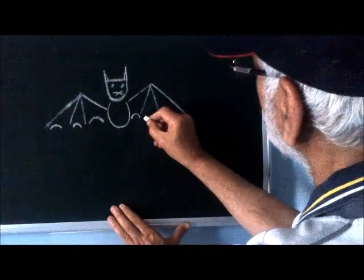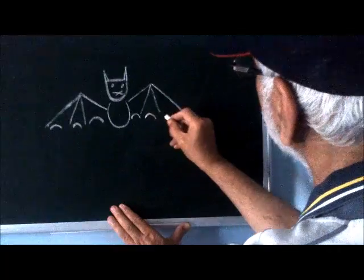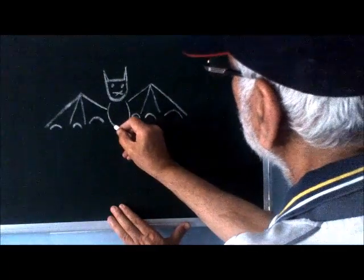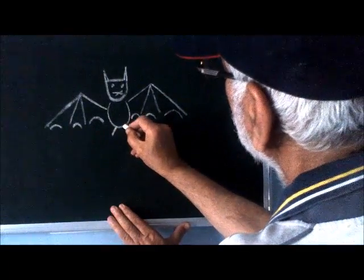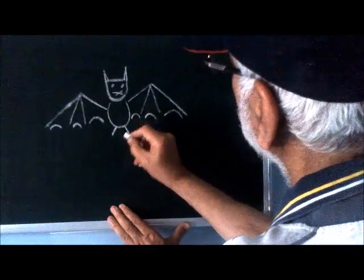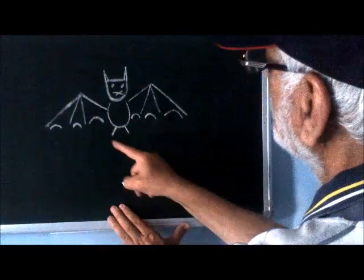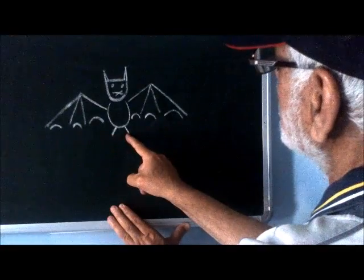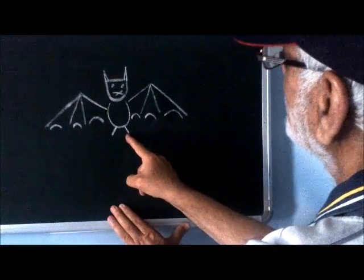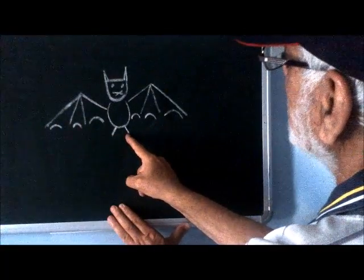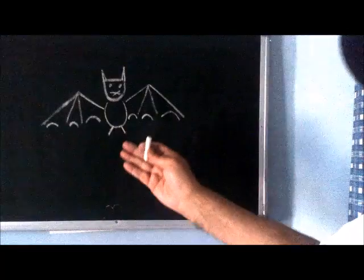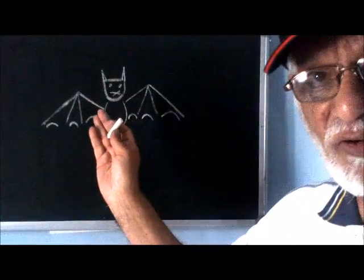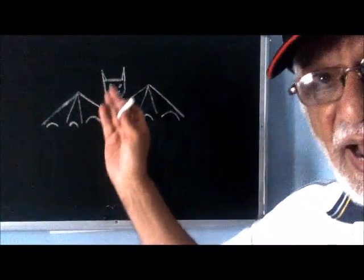Similarly, three curves here. Put two short lines here to indicate the back. This is the stick drawing of a bat.